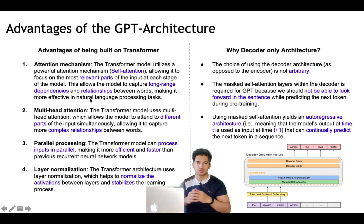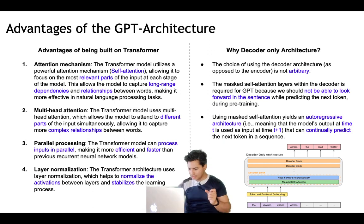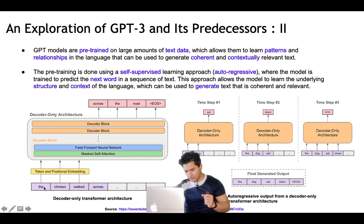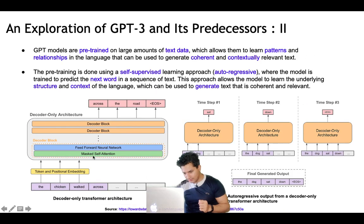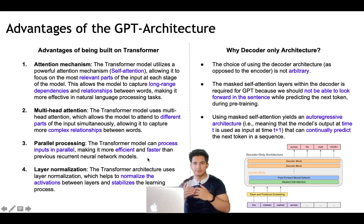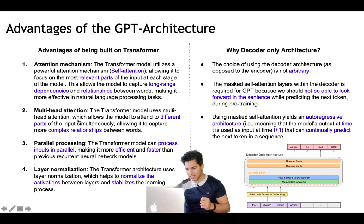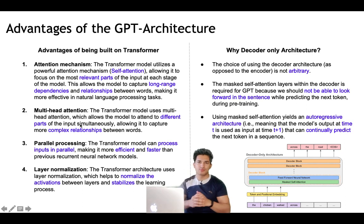The transformer architecture is based on the attention mechanism. The transformer model utilizes a powerful attention mechanism called self-attention, allowing it to focus on the most relevant part of the input at each stage. This allows the model to capture long-range dependencies and relationships between words, making it more effective in NLP tasks. When four words are passed through a self-attention layer, it finds the dependency of words on each other. Additionally, there is multi-headed attention — multiple attention heads running in parallel — which allows the model to attend to different parts of the input simultaneously, capturing more complex relationships.